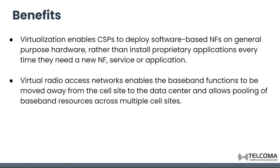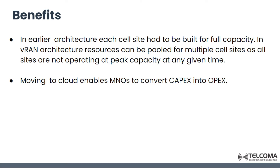Virtual radio access network enables the baseband functions to be moved away from the cell site to the data center, and it allows pooling of resources across multiple cell sites. In earlier architecture, each cell site had to be built for full capacity. In VRAN architecture, resources can be pooled for multiple cell sites as all sites are not operating at peak capacity.